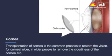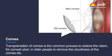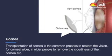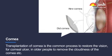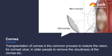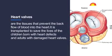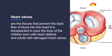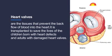Tissues that can be donated include: Cornea — transplantation of the cornea is a common process to restore vision for corneal ulcer in older people and to remove cloudiness of the cornea. Heart valves are tissues that prevent the backflow of blood into the heart; they are transplanted to save the lives of children born with heart defects and adults with damaged heart valves.